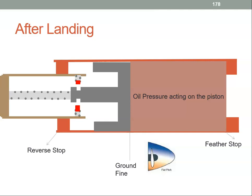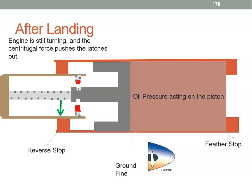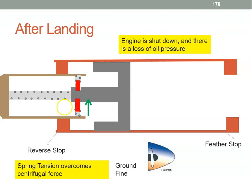Now let's assume the aircraft has completed its flight, come off the runway, taxied into the apron, reached its parking position, and we're ready to shut down. When we're in the ground range, the propeller is in the fine or ground fine position. There are still centrifugal forces acting on the latches; however, once the propeller is back in this position, the start latches align with the notch on the piston. So when the engine shuts down, we have no centrifugal force keeping the latches out, but the spring tension on the start latches pushes them in, and they hold the piston in position — so the feathering spring can't push the piston back to the feathering stop.